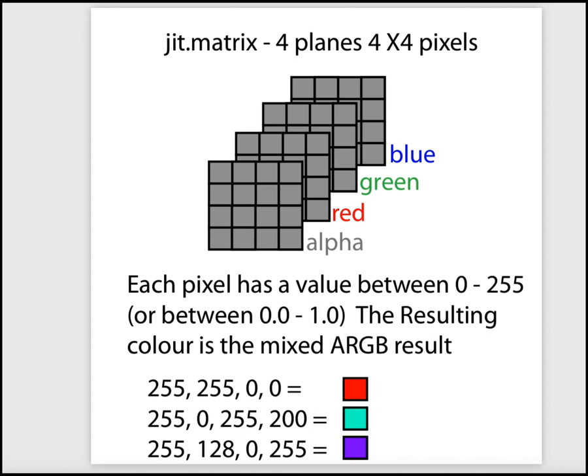When you look at signal objects, you notice that they all have a yellow and black patch cord when you connect them. When we deal with video images or video data, we have a green and black patch cord connecting the objects. So you can tell that this is a Jitter object passing video data from one component to another, just by the appearance of it.